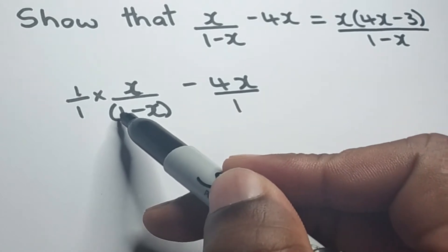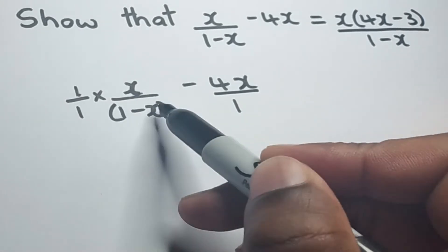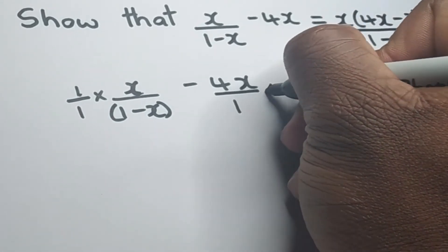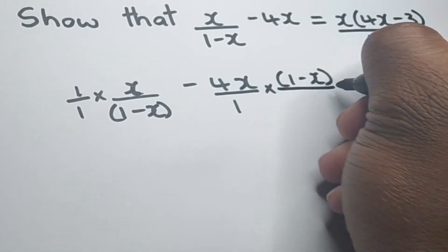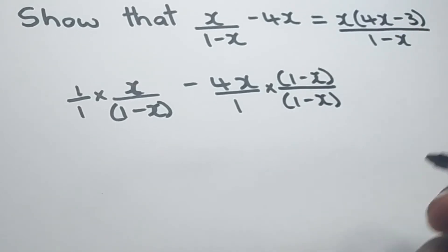And if we have 1-x over here in this denominator, we can simply multiply over here by (1-x) over (1-x).